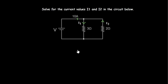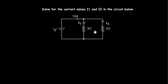Now let's apply what we've learned to some questions. The question asks us to solve for the current values i1 and i2 in this circuit. The total current from the source is 10 amperes, split across two parallel branches. I'll label the resistors R1 and R2 and apply the current division rule.